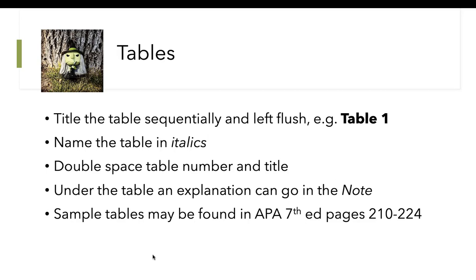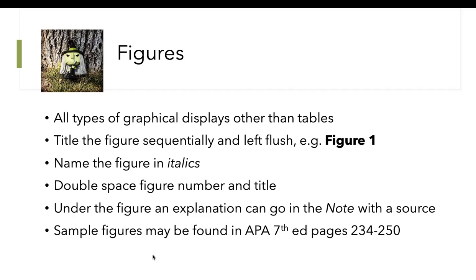For tables, flush to the left, put the label — Table 1, Table 2 — then the name underneath in italics, double spaced. At the bottom of the table, you might want a note to explain it. More details are in the APA guide, pages 210 to 224. For figures, just like tables, label it Figure 1 in bold, then the name in italics, double spaced. Notes at the bottom may also include the source where you got the image. For more on figures, see pages 234 to 250 of your APA guide.